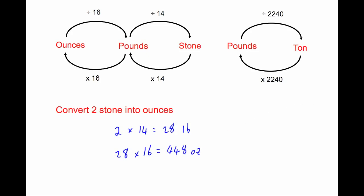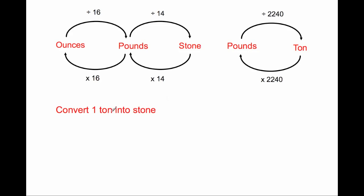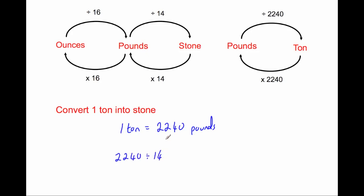Our last question: change 1 ton into stone. To change from tons into stones, let's change into pounds first. We know 1 ton is equal to 2,240 pounds. To change from pounds into stones, we divide by 14. So we take 2,240 and divide it by 14, and we get the answer of 160. So the answer is 160 stone.